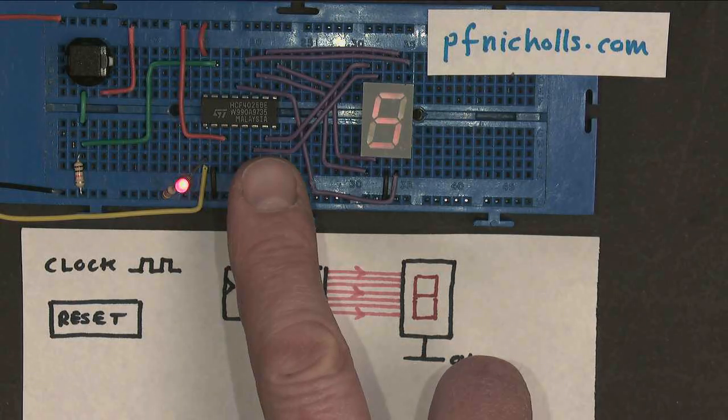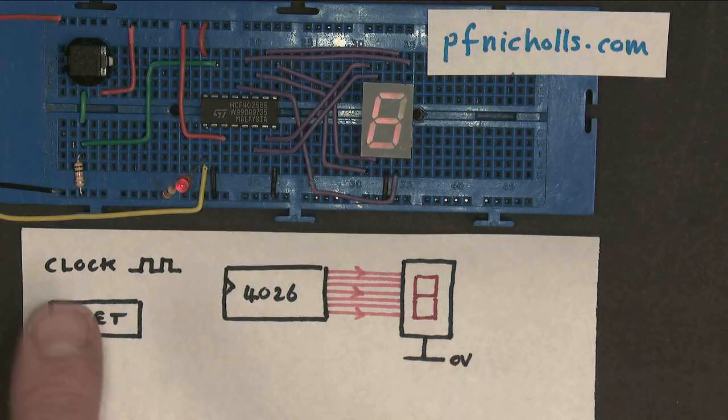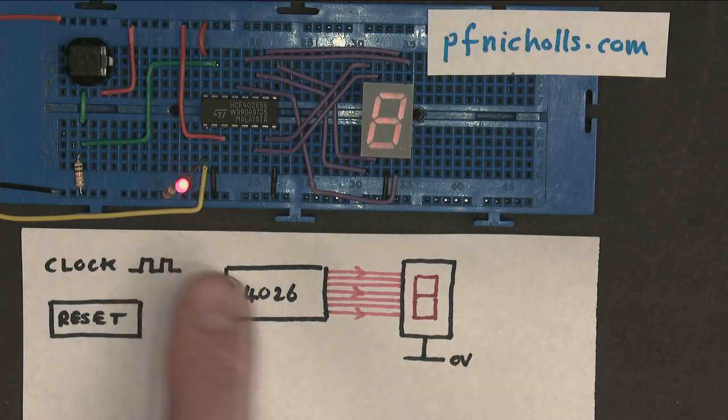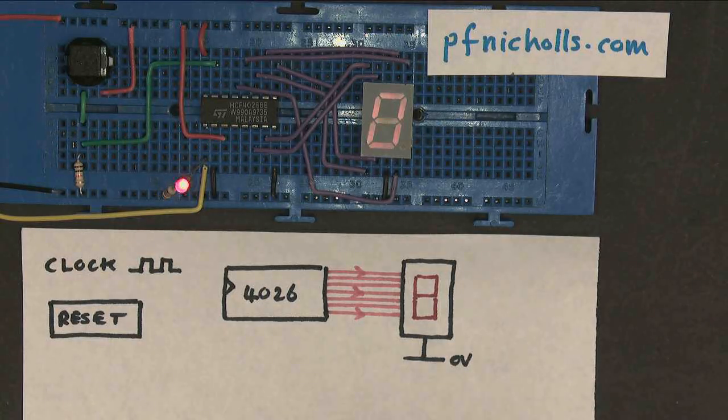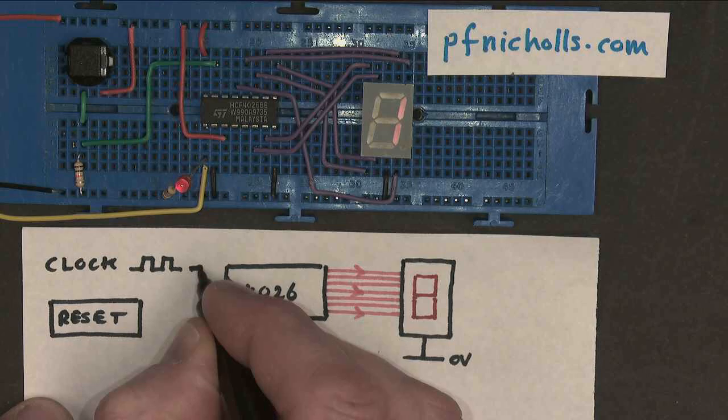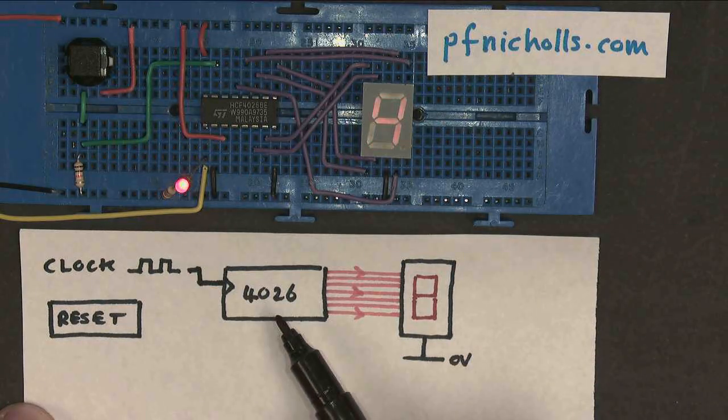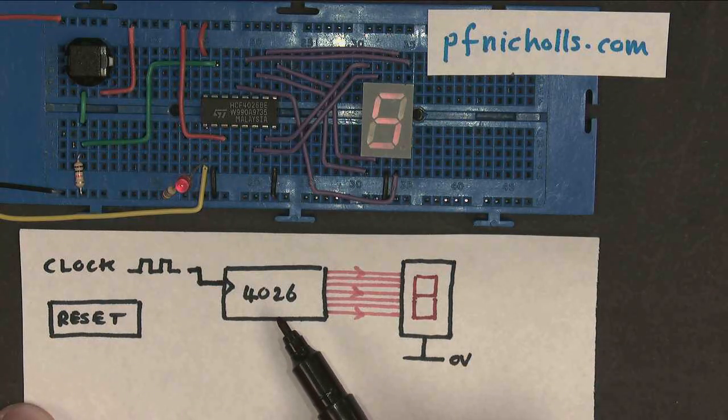This is a 4026 counter IC. I've provided it with a clock pulse along this yellow wire, which is represented by the red LED. The clock goes into the clock, and being a counter IC, it's happily counting the clock pulses.